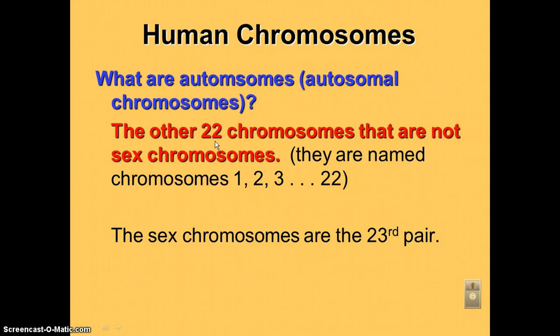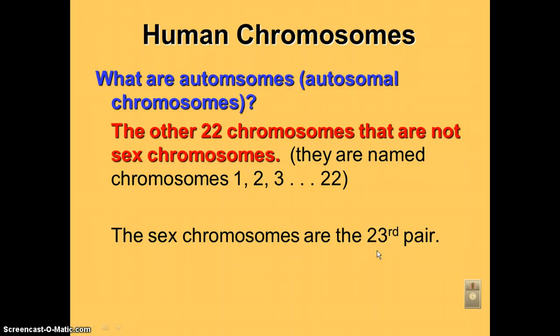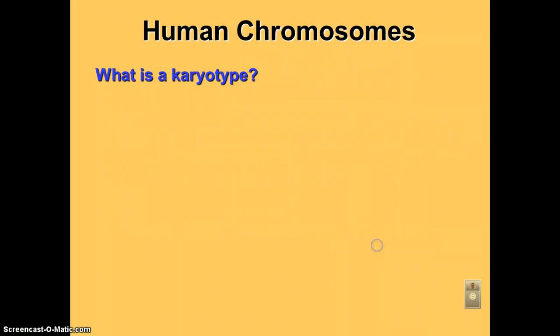We have 22 different autosomes, and then we have a pair or set of sex chromosomes. Sometimes the sex chromosomes are not necessarily referred to as sex chromosomes, but they'll be called the 23rd pair. So remember: the 23rd pair and sex chromosomes are the same thing. That's the end of this first podcast — the next one is going to be on karyotypes.